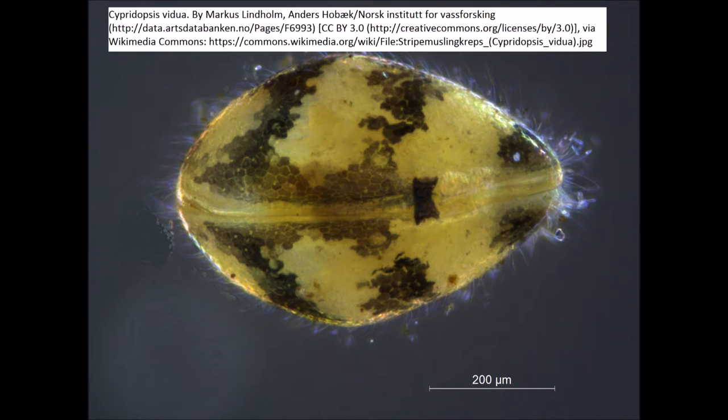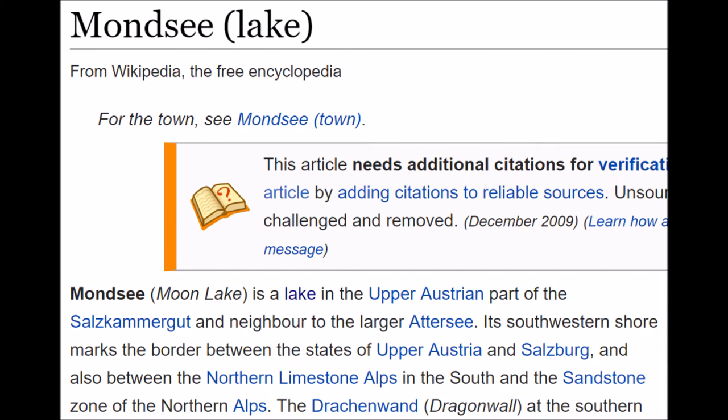Cypridopsis vidua is one of the most common species of freshwater ostracods globally. It is very variable in its carapace morphology and coloration, ranging from green, purple, to black stripes, or with no stripes at all. The experimenters collected C. vidua from the Mondsee in Austria.